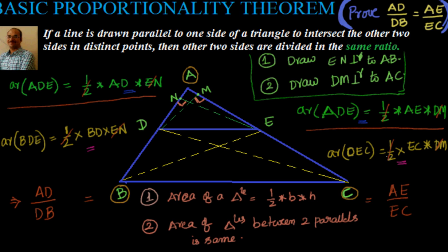To recap: to prove the basic proportionality theorem, we used two inputs — area of a triangle equals half base into height, and areas of triangles with a common base between two parallel lines are equal. We found the area of ADE in two ways, found areas of BDE and CDE which are equal, then took the ratio to get the result. If this is unfamiliar, refer back to ninth class quadrilaterals.